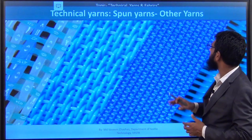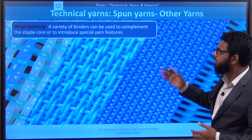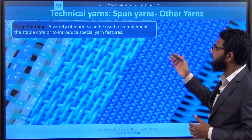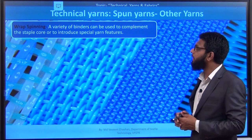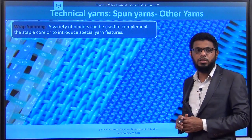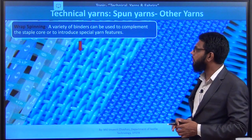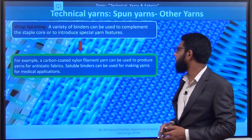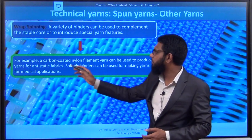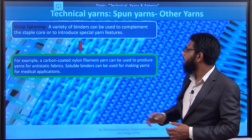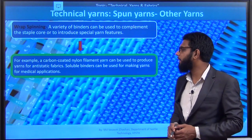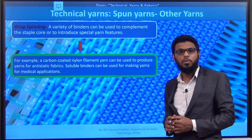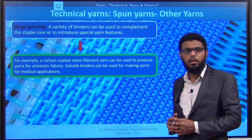There are other types of yarns with some limited application in technical textile. Wrap spinning has some good application in technical textile because here also a bi-component configuration can be used — a staple core or introduction of special yarns, which is the feature of wrap spinning. For example, carbon-coated nylon filament yarn can be used to produce yarn for anti-static fabric using wrap spinning with a solution binder. This binder can also be used for making yarn for medical applications.